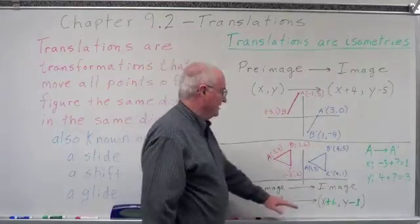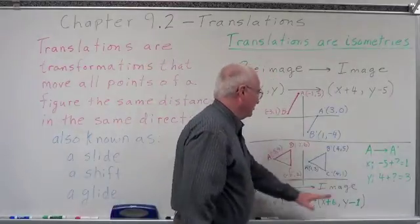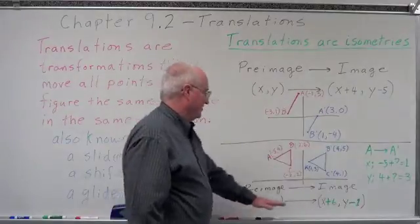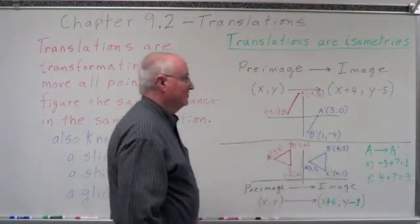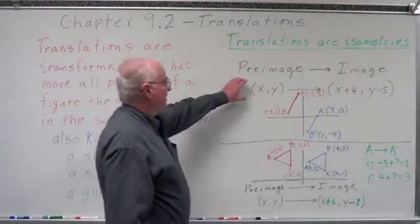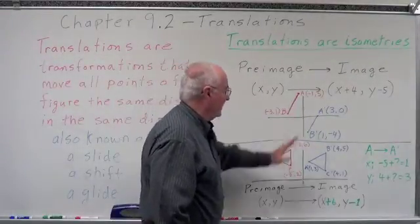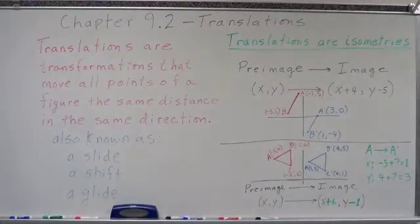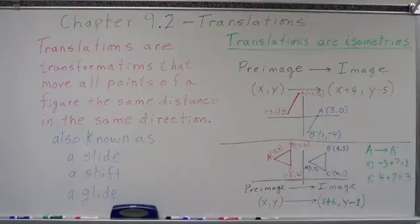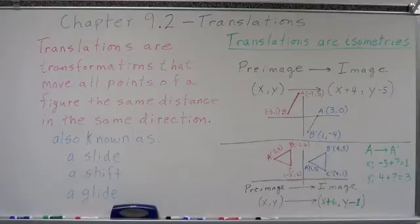Our pre-image and our image were given. We looked at the figures to determine the rule, which was x + 6 and y − 1. So we can either be given a rule to move by, or we can be given two images and discover what the rule is. You'll have both kinds of problems on homework, test, chapter test, and 6-weeks test.